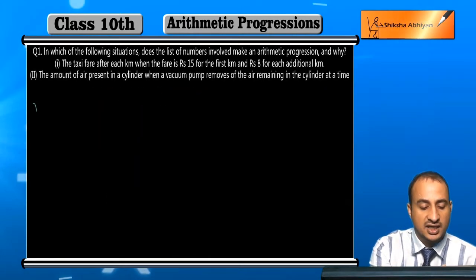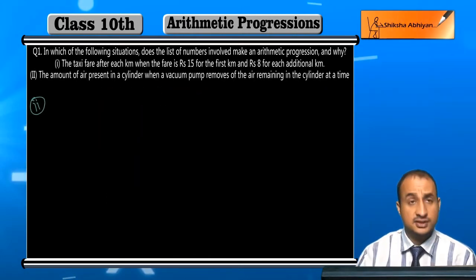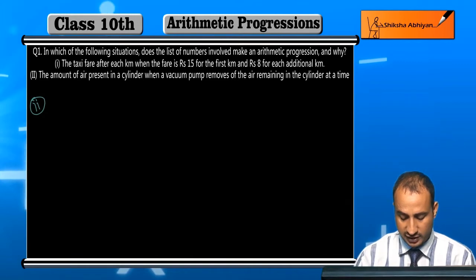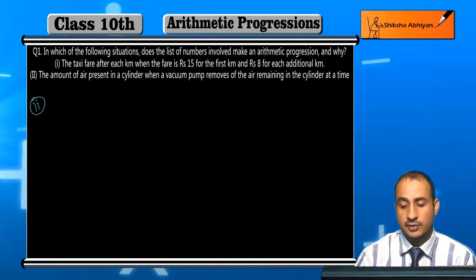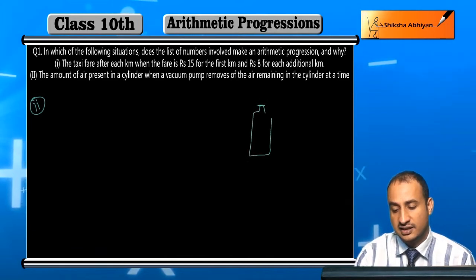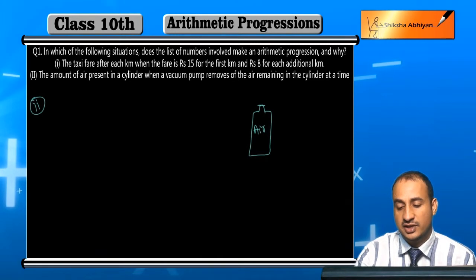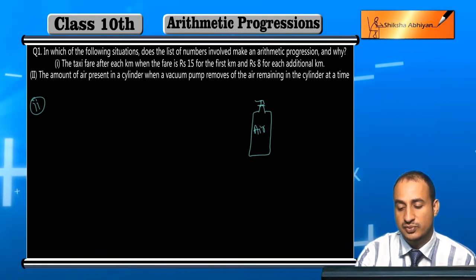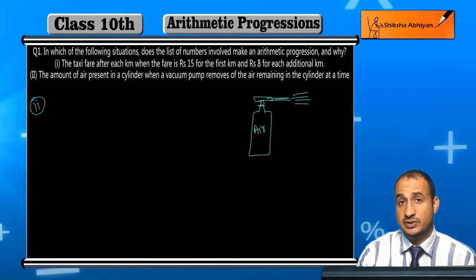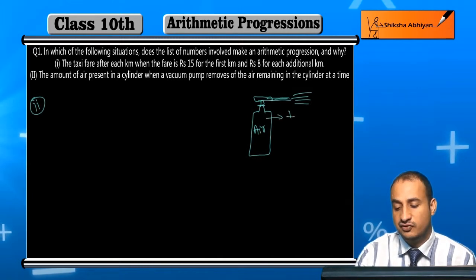Now the second situation: the amount of air present in a cylinder when a vacuum pump removes one fourth of the air remaining in the cylinder each time. If we see here, this is a cylinder containing air. Every time the vacuum pump operates, one fourth of the remaining air is removed, leaving three fourths.